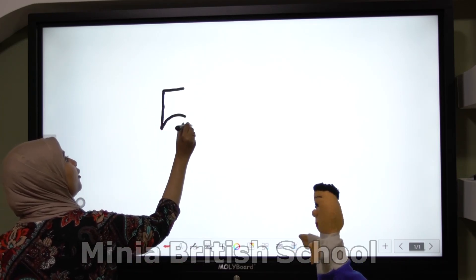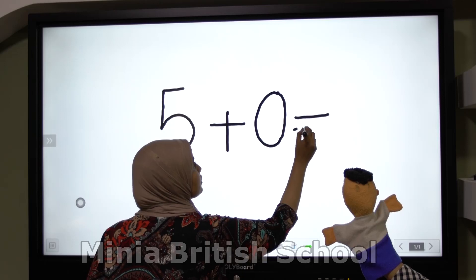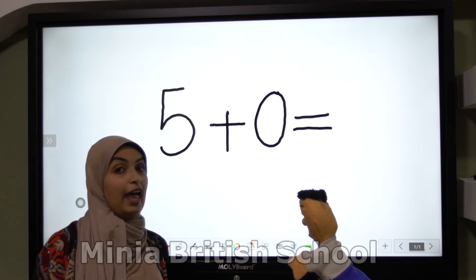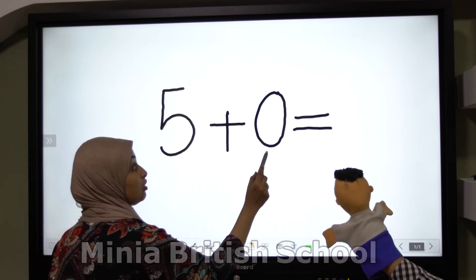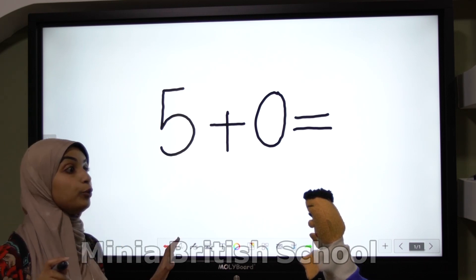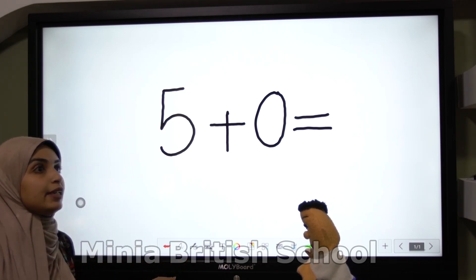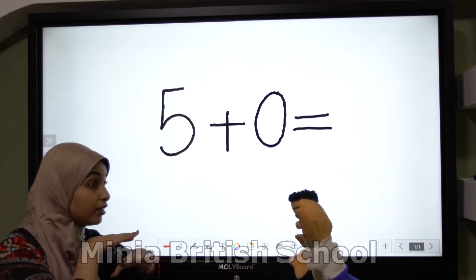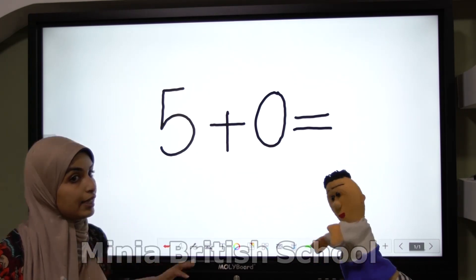Five plus zero equals. Let's see together and with Keiji. Can you read this equation, Tom? Five plus zero equals. Okay, let's see together what we will do. Any number — say six, eight, one hundred, any number — put it with zero. Okay, put the same number here.